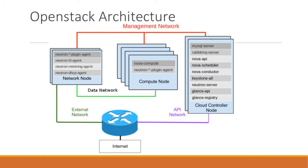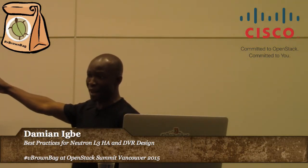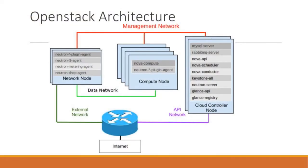In this architecture, the network node is just one. Until the Juno release, you didn't have the capability to make the network node redundant — you could only have one. What that means is that if your network node goes down, your entire cloud is down. And since the network is the cloud, you won't have any access to your resources. That is problem number one: you cannot do HA on the network node.